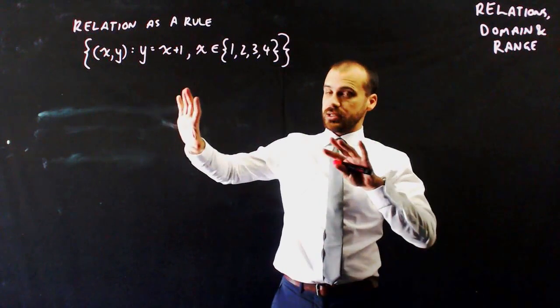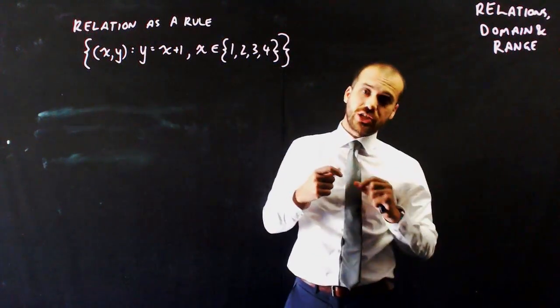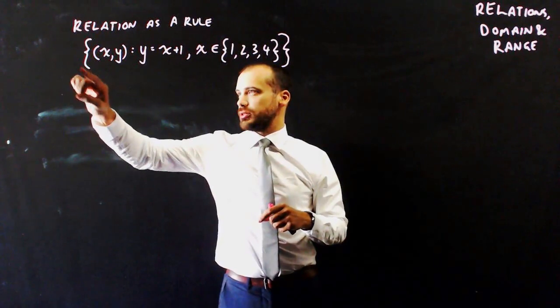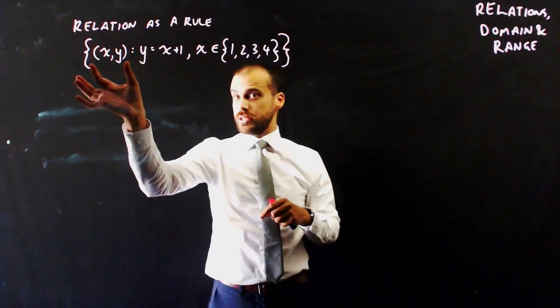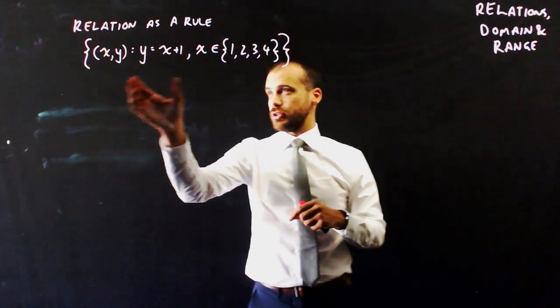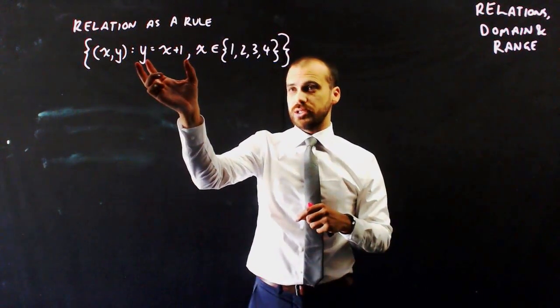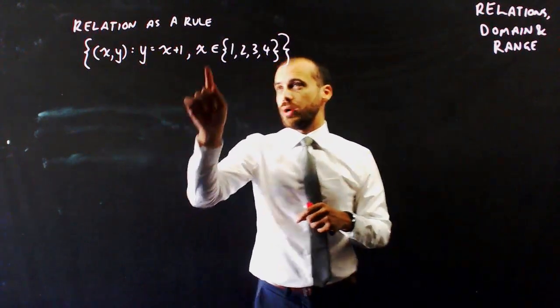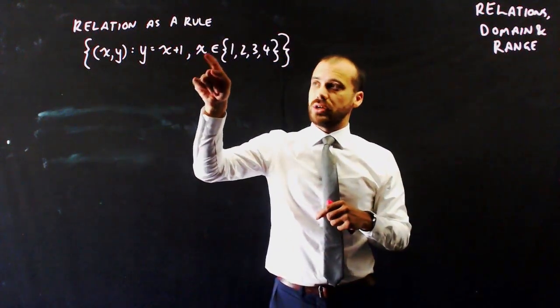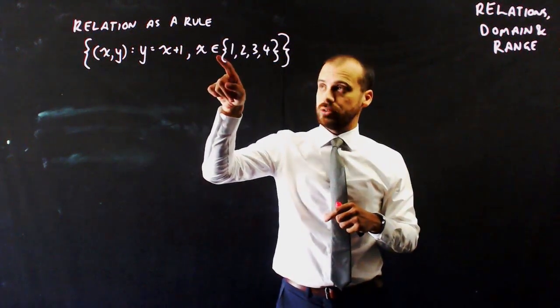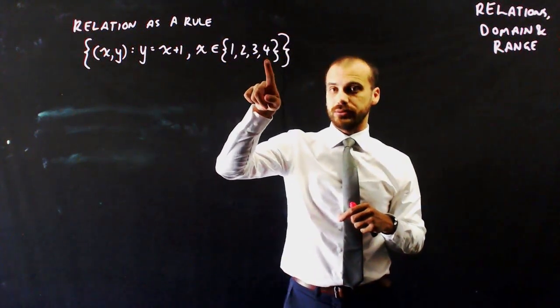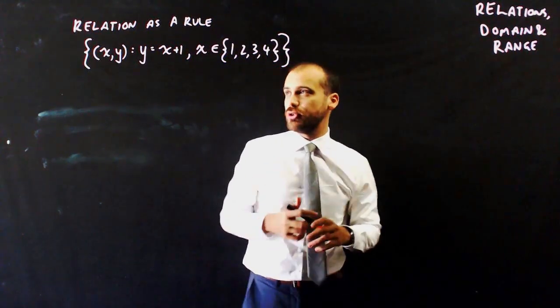Okay, so what this says is the relation can be expressed as a rule where the set of ordered pairs x and y follows the rule y equals x plus 1, where the x values are the set 1, 2, 3, 4. Okay, so what does that look like? You've done this before.